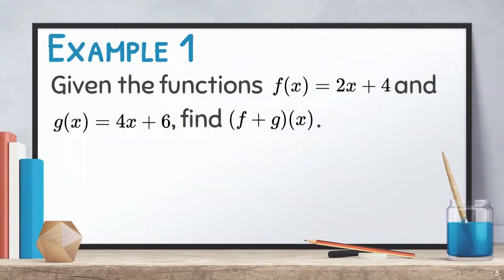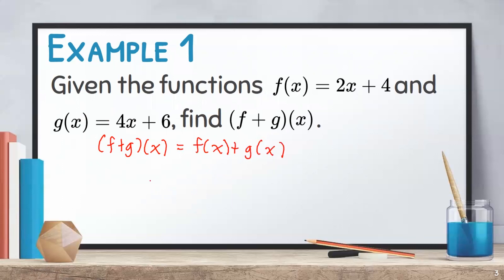Let us have some examples. Given the functions f of x equals 2x plus 4 and g of x equals 4x plus 6, find f plus g of x. Based on the formula, to solve for f plus g of x, what we need to do is to add the two given functions, f of x plus g of x. Thus, we will have 2x plus 4 plus 4x plus 6. What we did here is we substituted the given f of x and the given g of x into our formula.